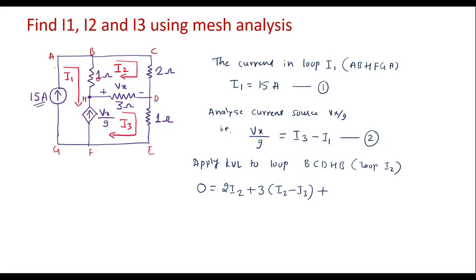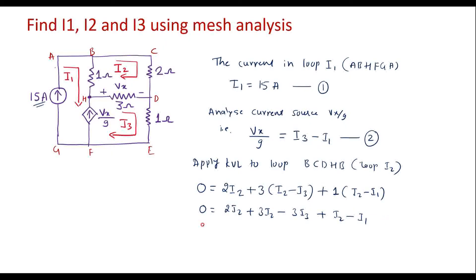The voltage across the 1 ohm resistor: in the 1 ohm resistor, current I2 as well as current I1 is flowing. So we write it as 1·(I2 − I1), because I2 and I1 are opposite to each other. As we are in loop I2, we give preference to I2. Simplifying: 2·I2 + 3·I2 − 3·I3 + I2 − I1, which gives −I1 + 6·I2 − 3·I3 = 0. I will call this equation 3.